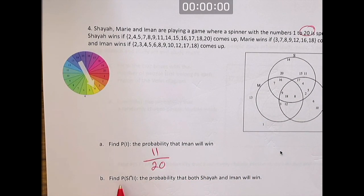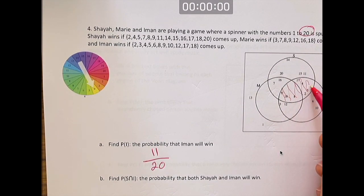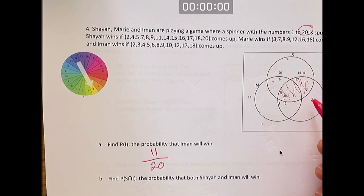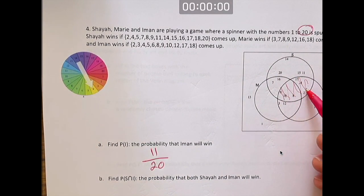What's the probability of S and I? That means probability that Shea and Iman will both win. Shea and Iman is this region right here. This region is inside the Shea circle and it's inside the Iman circle. There are 1, 2, 3, 4, 5, 6, 7 numbers. 7 out of 20.